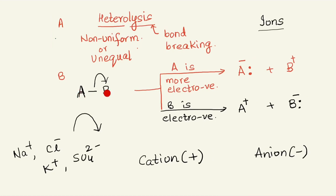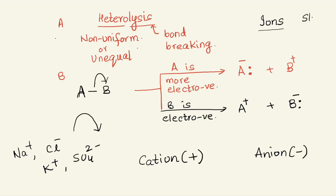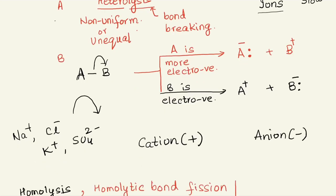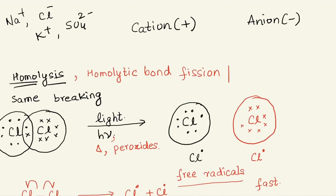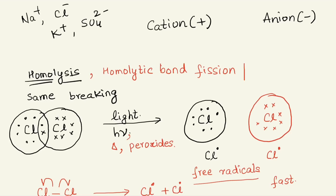Now imagine a tug of war between A and B for the electrons. Although the more electronegative one will ultimately take the electrons, this struggle slows things down. So heterolytic bond fission is slower compared to homolytic bond fission.